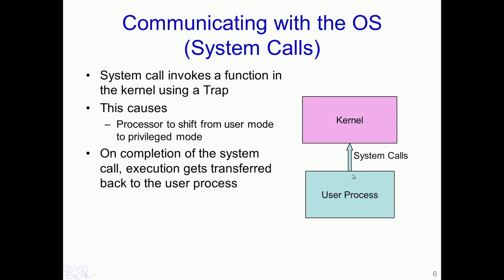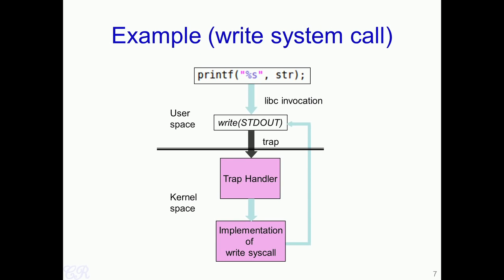What happens when a system call is invoked is that a process which is generally running in a user mode gets shifted to something known as a kernel mode or a privilege mode, which will allow the kernel or the operating system to actually execute. When the system call completes execution, then the user process will resume its execution from where it actually stopped. Let us take an example of the printf statement. Printf is, in fact, a library call.